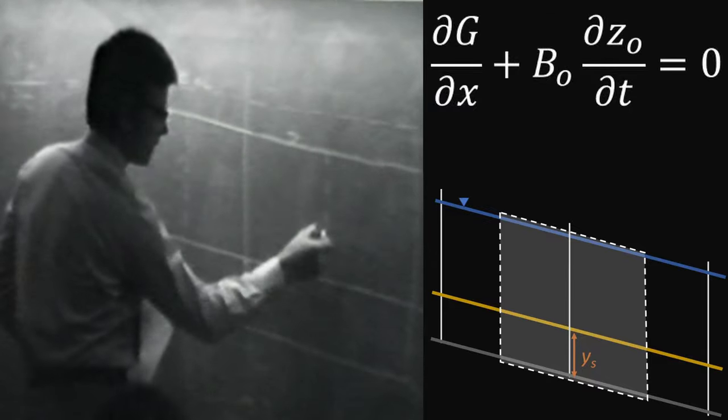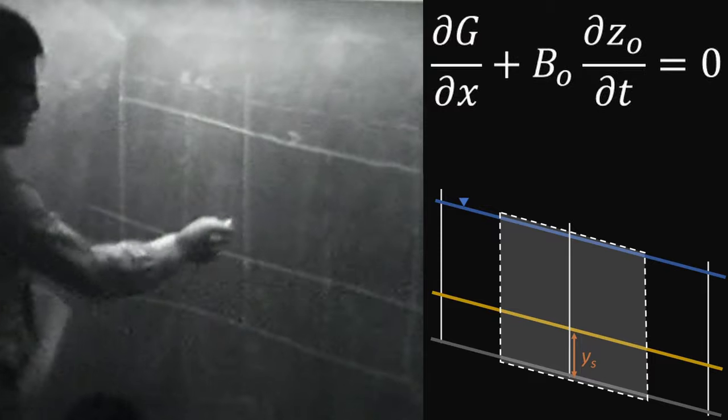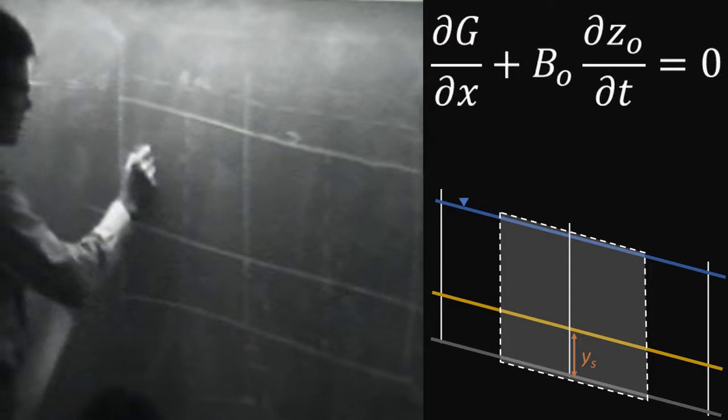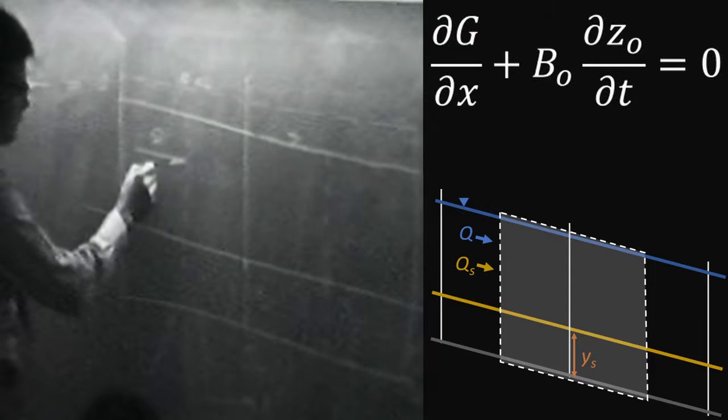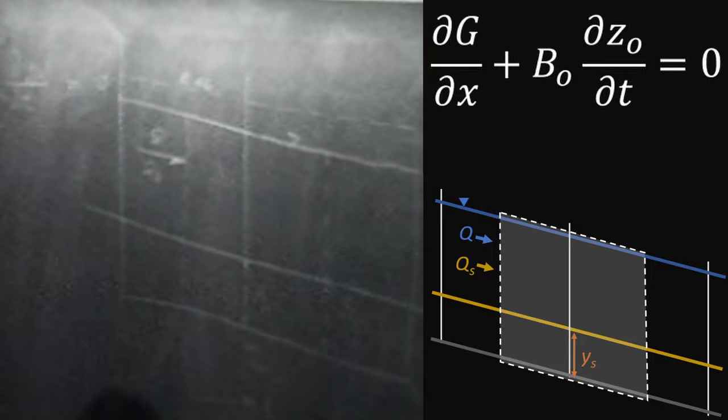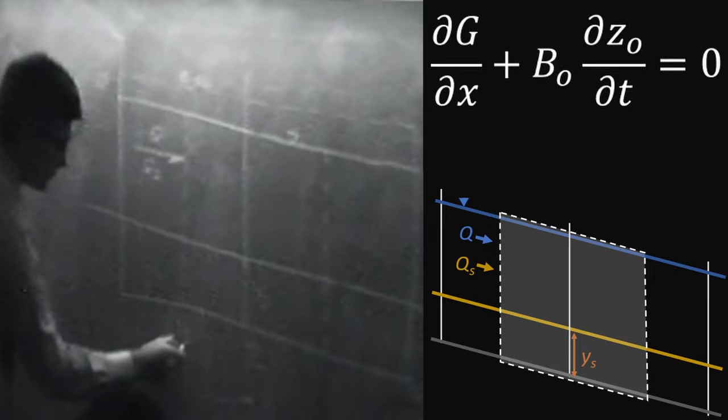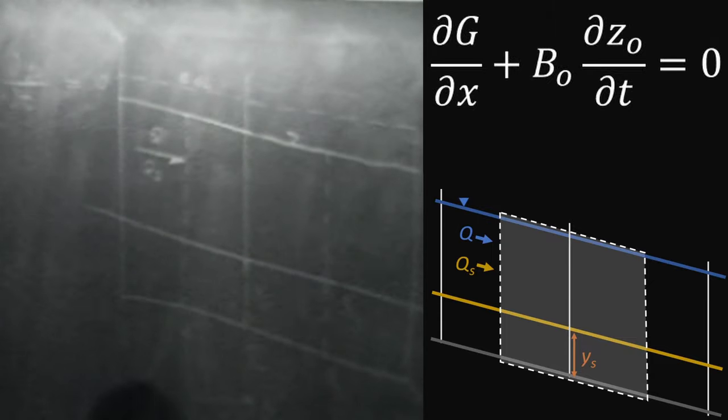Looking at this cross-section two, let's put on the sketch the water discharge Q and the inflowing sediment load. Then we can take this equation here and say, if we want to do a finite difference between the upper boundary and the downstream boundary on our control volume...